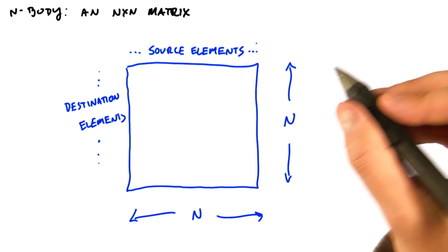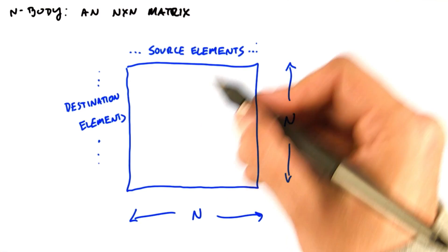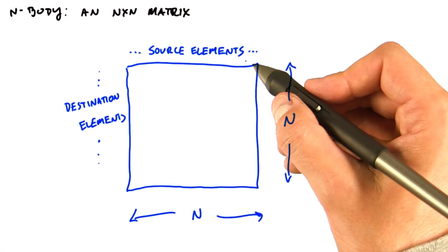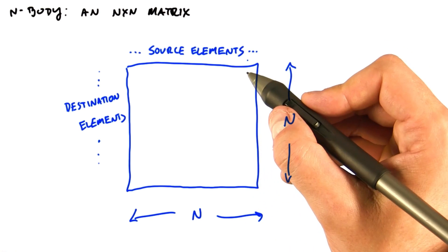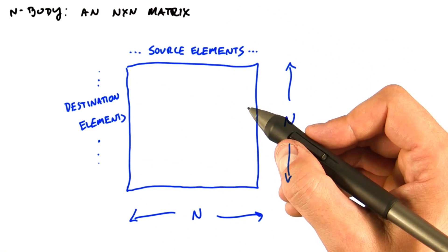Let's start by looking at how we might implement this as simply as possible. We're going to begin by thinking about this computation as working on an n by n matrix. The n-bodies on the x-axis here are the source of each force, and the n-bodies on the y-axis here are the destination of each force.